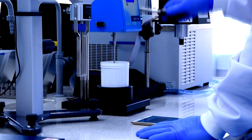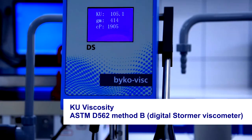The first test is the stormer viscosity, also called KU viscosity.